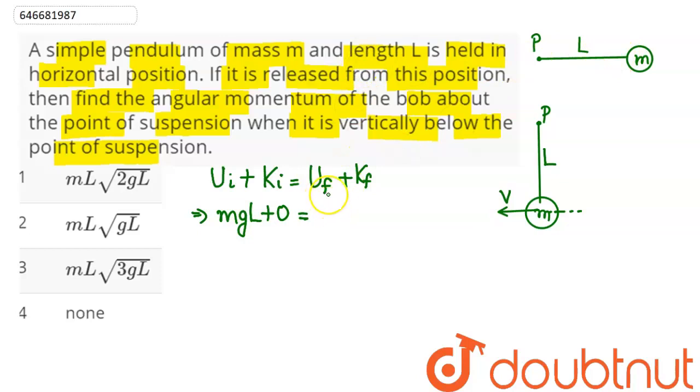Final potential energy at this lowest level will be zero and kinetic energy here will be half mv square. So m and m cancels out.